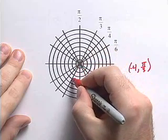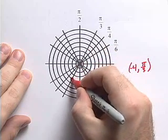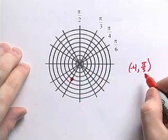So we'll go 1, 2, 3, 4. And there's the point negative 4, pi over 3.